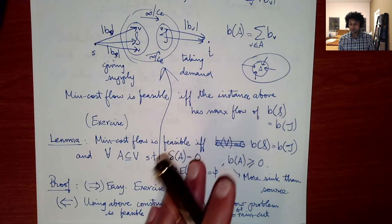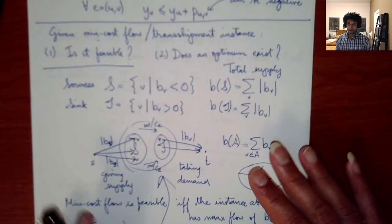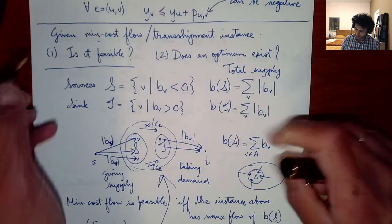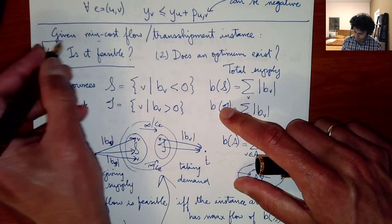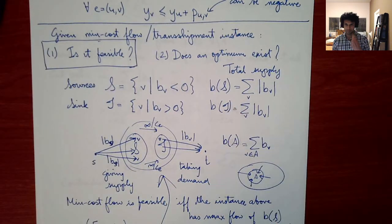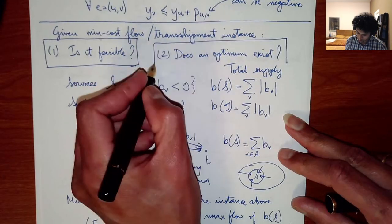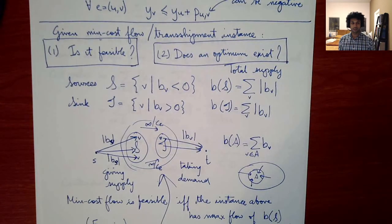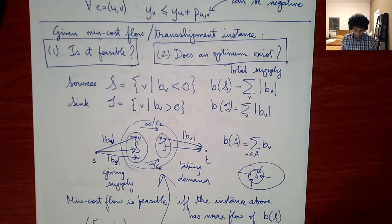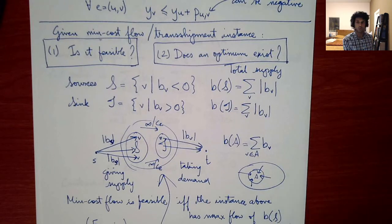Now the second question: does an optimum exist? Since prices can be negative, the minimum cost might be minus infinity. We need to characterize when an optimum actually exists.